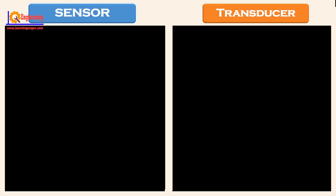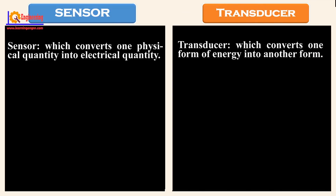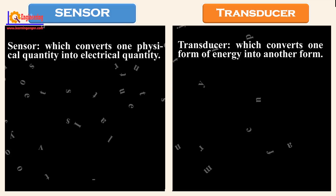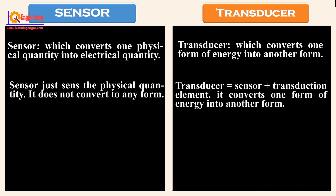Now we see the difference between sensor and transducer explained in the comparison chart. A sensor converts one physical quantity into an electrical quantity. A transducer converts one form of energy into another form. A sensor just sends the physical quantity and does not convert to any form, whereas a transducer consists of a sensor plus a transduction element.